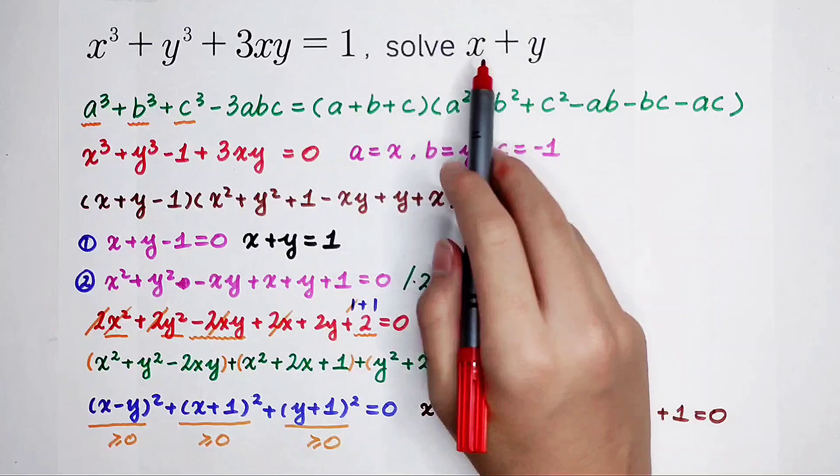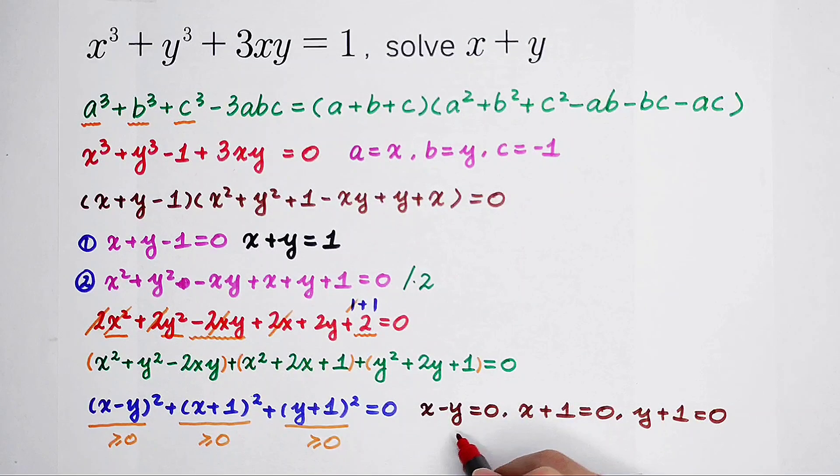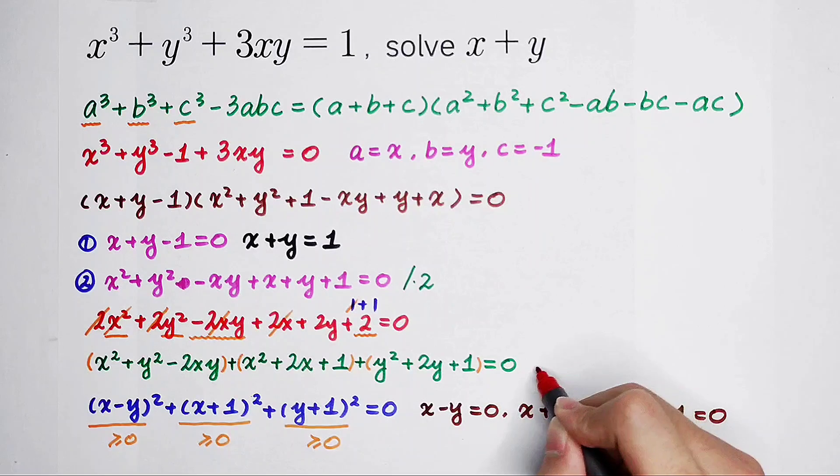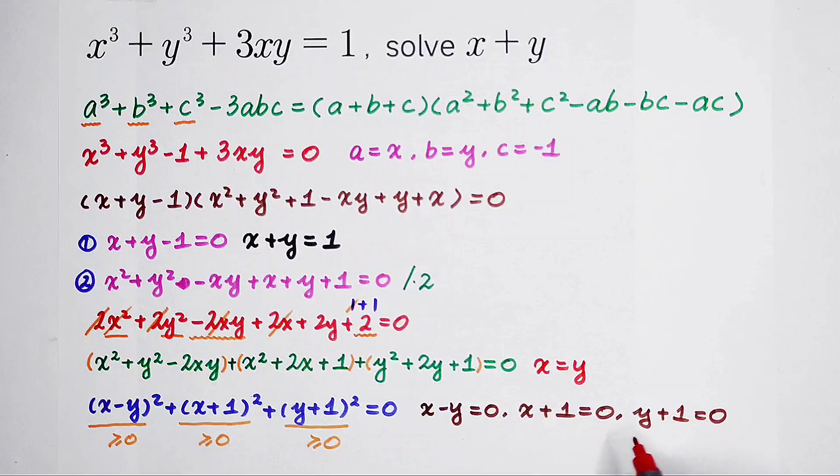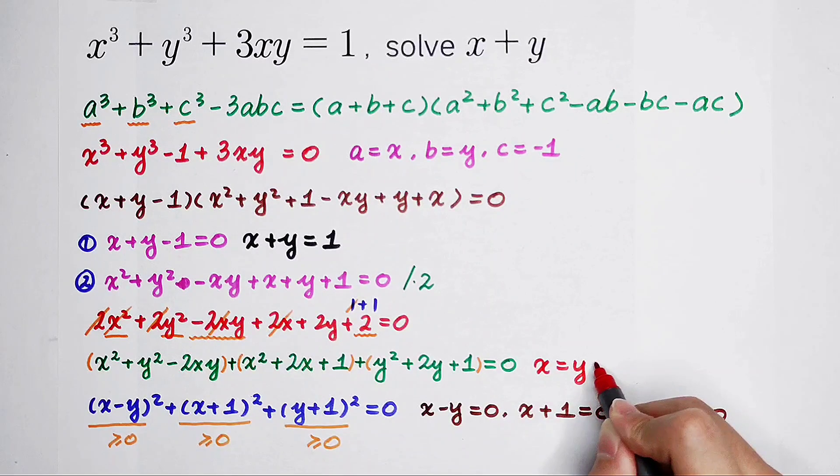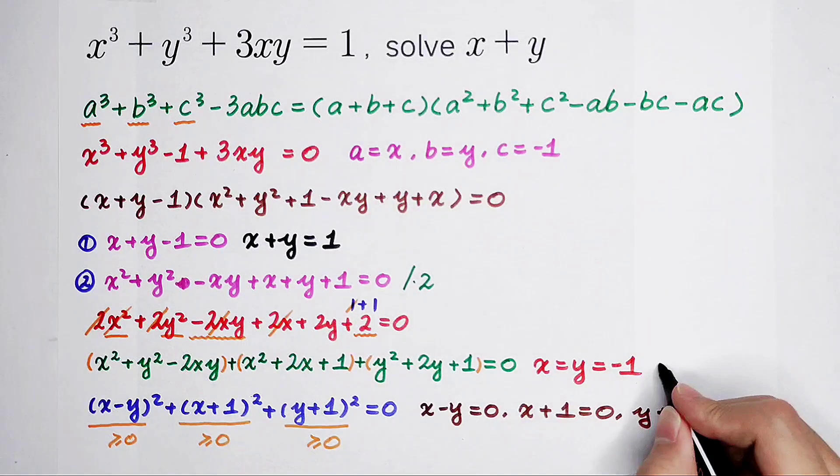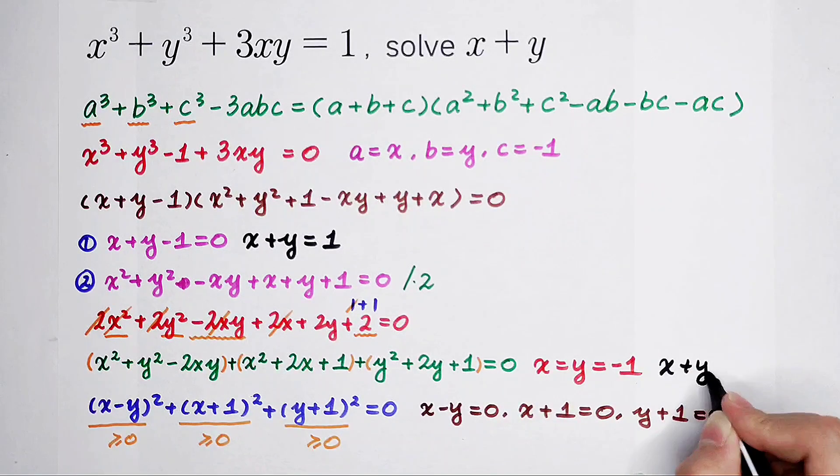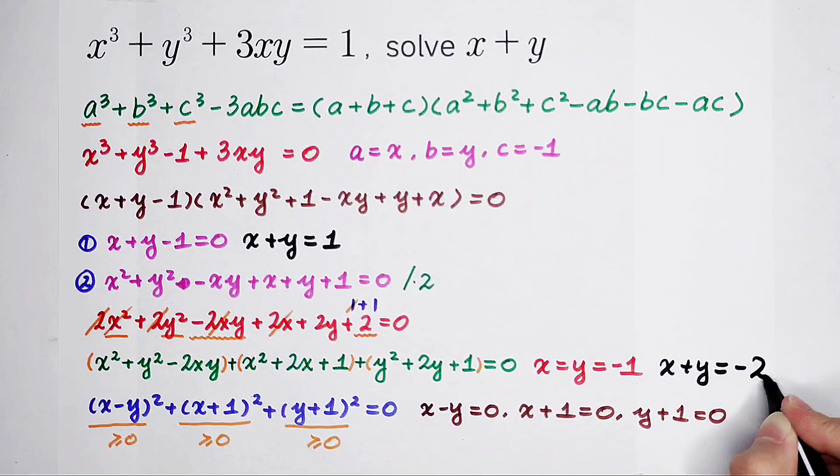In this case, I will write it here. x minus y equals 0, so x equals y. But x plus 1 equals 0, and y plus 1 also equals 0, so they have the same value, and they both equal negative 1. So in this case, x plus y equals negative 2.